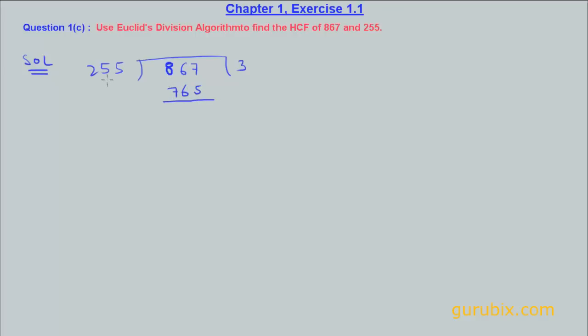765. After subtracting 765 from 867 we get 102.